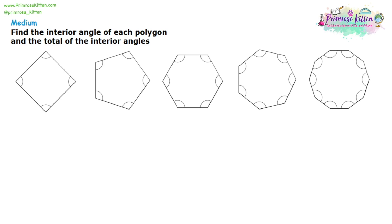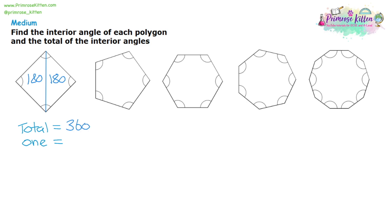Moving on to the medium questions, we'll look at something called interior angles. With the easy questions, the angles were drawn on the outside of the shapes; now they're drawn on the inside. We're going to find the total interior angles and find one interior angle. The way to find the total interior angles is to think about triangles, which add up to 180 degrees. We're going to cut every single shape up into triangles. The first shape, which is a square, has a 180-degree triangle on the left and one on the right. So we add together two 180s, giving us 360 degrees. Dividing by four gives us 90 degrees.